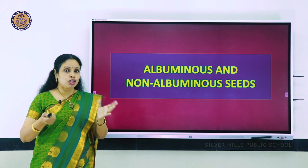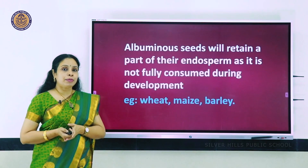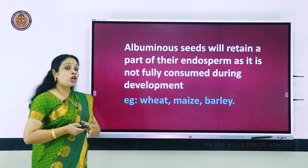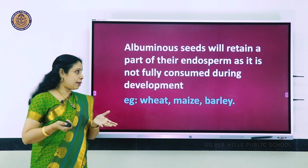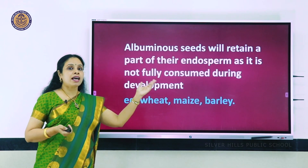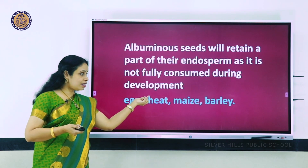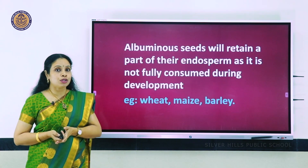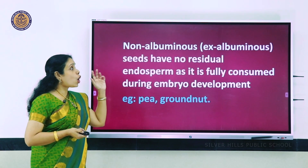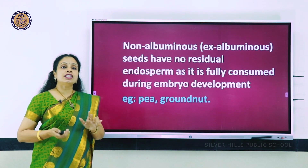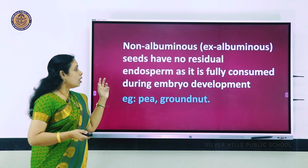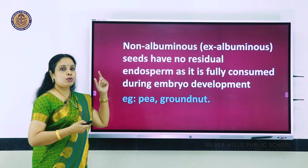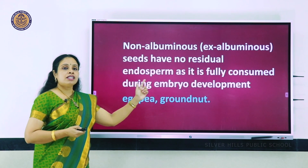Seeds can be classified into albuminous and non-albuminous. Albuminous seeds retain part of their endosperm because it is not fully consumed during development - examples are wheat, maize, and barley. In non-albuminous seeds, there is no residual endosperm because the embryo fully consumed it during development - examples are pea and groundnut.